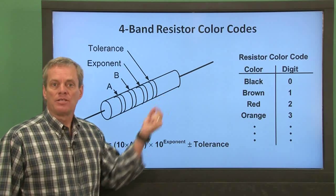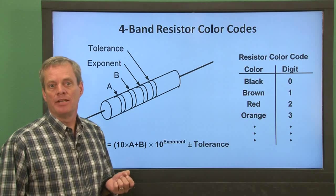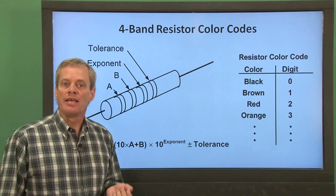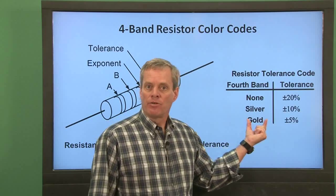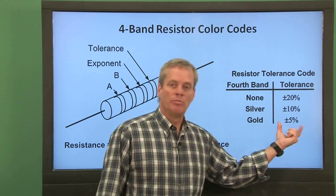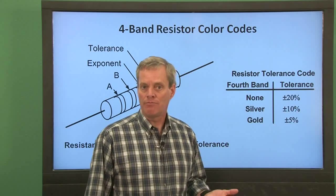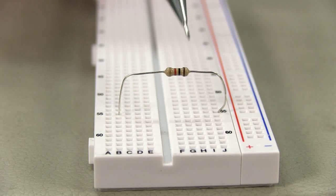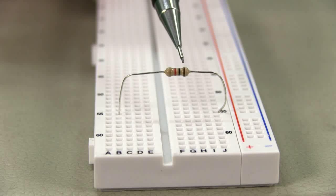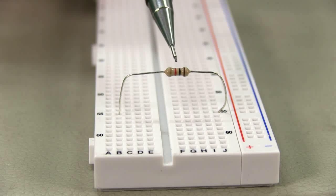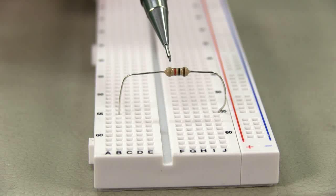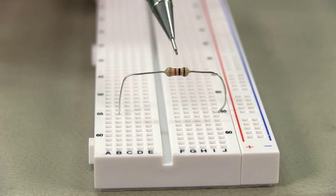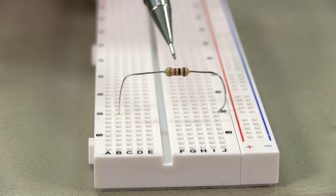The fourth band is tolerance. It provides the maximum error between the expected and nominal resistance of the resistor as a percent of the nominal resistance. A gold band, for example, means that the actual resistance value will be within five percent of the value coded on the resistor itself. The bands on this resistor are brown, black, and red. The first two bands, brown and black, correspond to 1 and 0 respectively, so the mantissa is 10. Red is 2, so the overall resistance is 10 times 10 squared, or a thousand ohms, or one kilo-ohm. The tolerance band is gold, which corresponds to a five percent tolerance. The resistance of this resistor is guaranteed to be within five percent of the nominal value of one kilo-ohm.